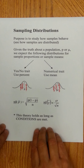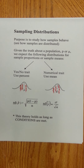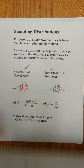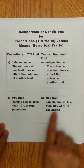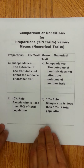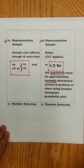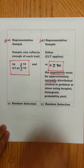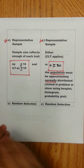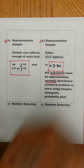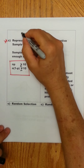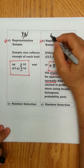All this holds as long as conditions are met. Those conditions are independence, which is the same for both; the 10% rule, which is exactly the same for both; and randomization, exactly the same for both. The only place where they differ is in showing that the sample size is large enough, for a yes-no trait versus a numerical trait.